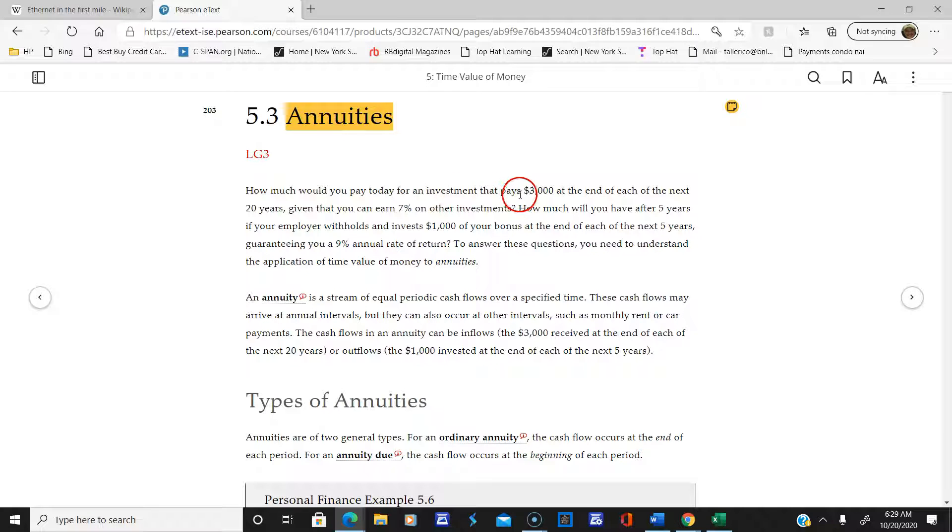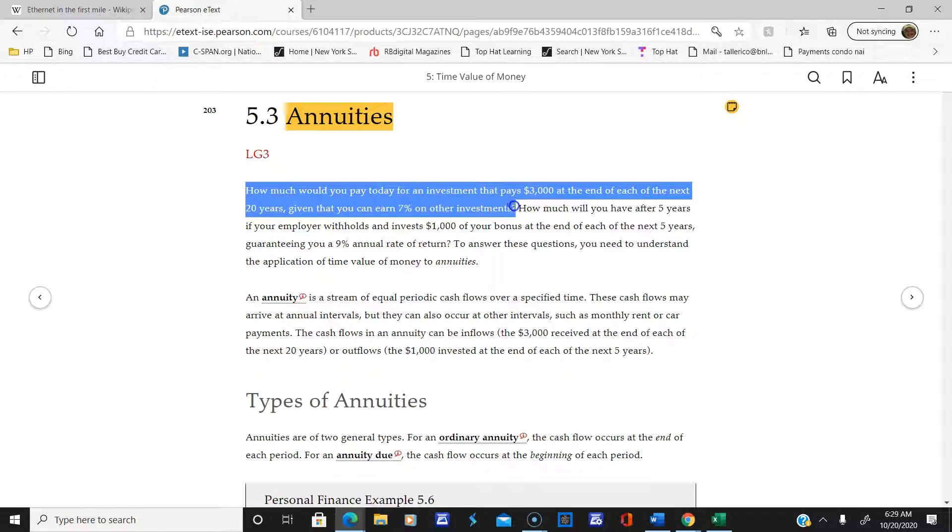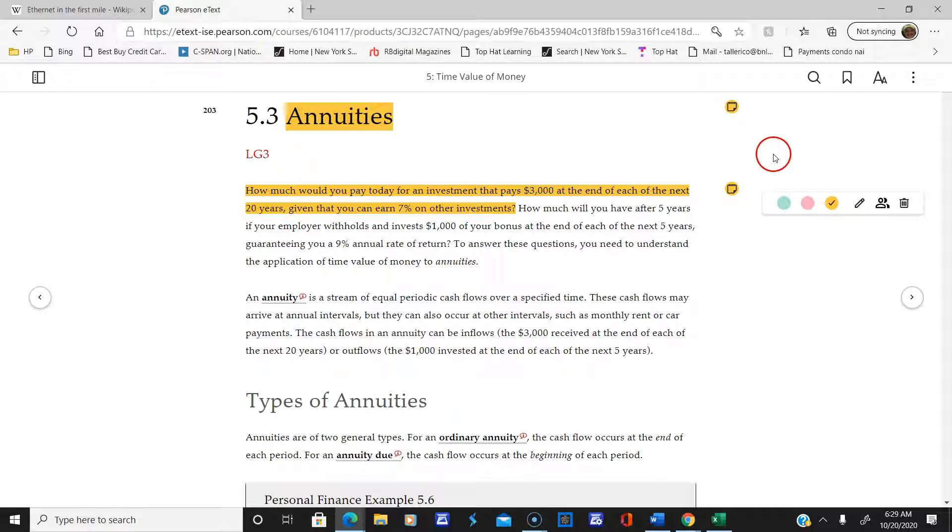How much would you pay today for an investment that pays $3,000 at the end of each of the next 20 years? It's important to understand an annuity can go one of two ways. You can invest in an annuity, putting money in every year and hope to get some amount at the end. Or you could receive money at the end of the period. An example is your 401k where you put money in for several years, then start taking money out. Social Security is the same way - you put money in from your paycheck, then take money out when you retire.